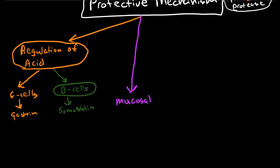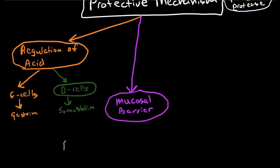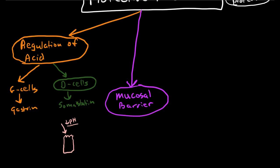The next part is the mucosal barrier. There are adaptations of the mucosal barrier that make it very unique in the stomach. First, we have unique adaptations to the columnar epithelial cells. We don't know the exact mechanism, but we know that the apical surface — the surface that points into the stomach — is very resistant to a low pH. The cell is adapted so that the apical surface cannot be damaged easily by low pH. This is called apical membrane resistance.